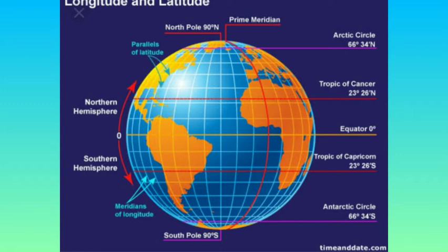We have four major latitudes: the Tropic of Cancer at 23.5 degrees north, the Tropic of Capricorn at 23.5 degrees south, the Arctic Circle at 66.5 degrees north, and the Antarctic Circle at 66.5 degrees south.